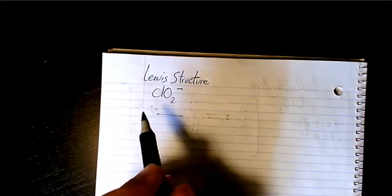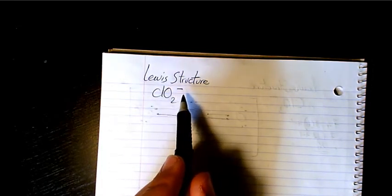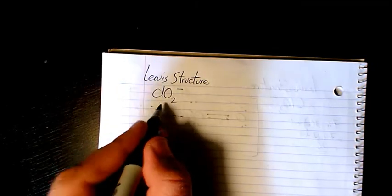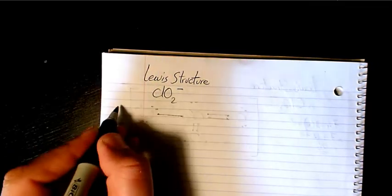What's up guys, this is Massey. Welcome to my channel. In this video I want to show you how to draw Lewis structure for ClO2 minus, or chlorite ion. So how many valence electrons do we have? We have seven plus two times six plus one from here.